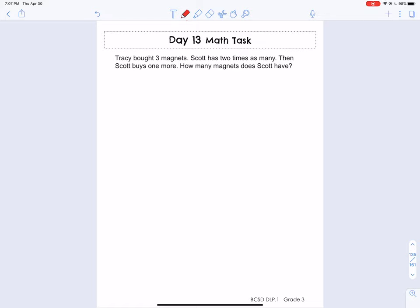Okay, to get an understanding of this math task, we need to really understand or point out the math language being used here. We start off with Tracy bought three magnets. Scott has two times as many. Immediately when I hear two times, I'm thinking multiplication.